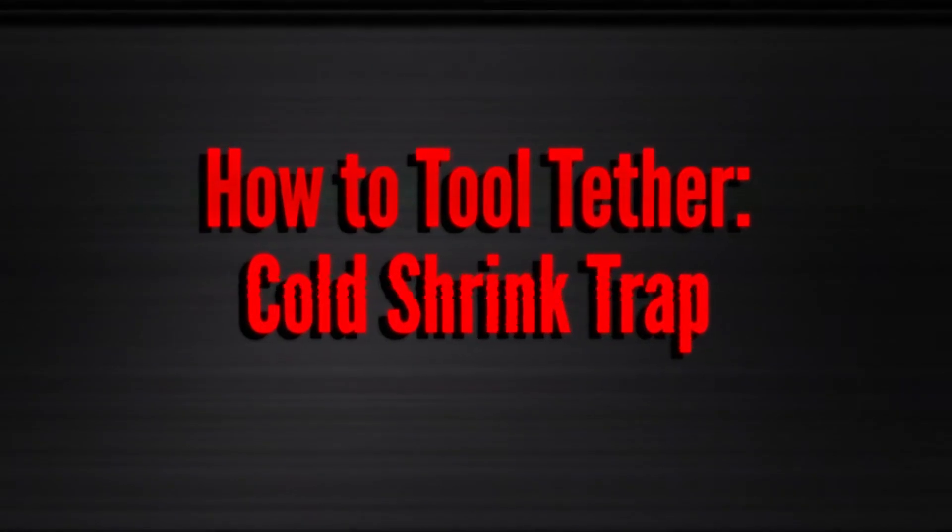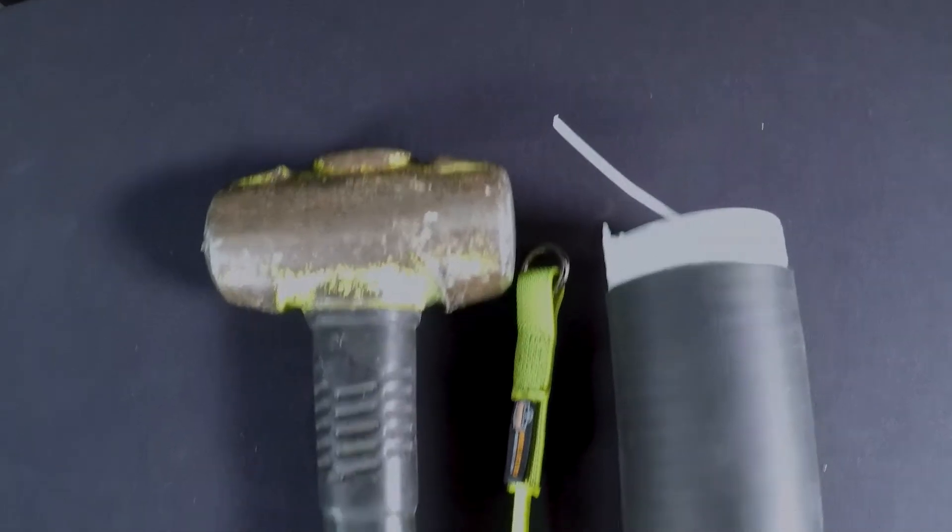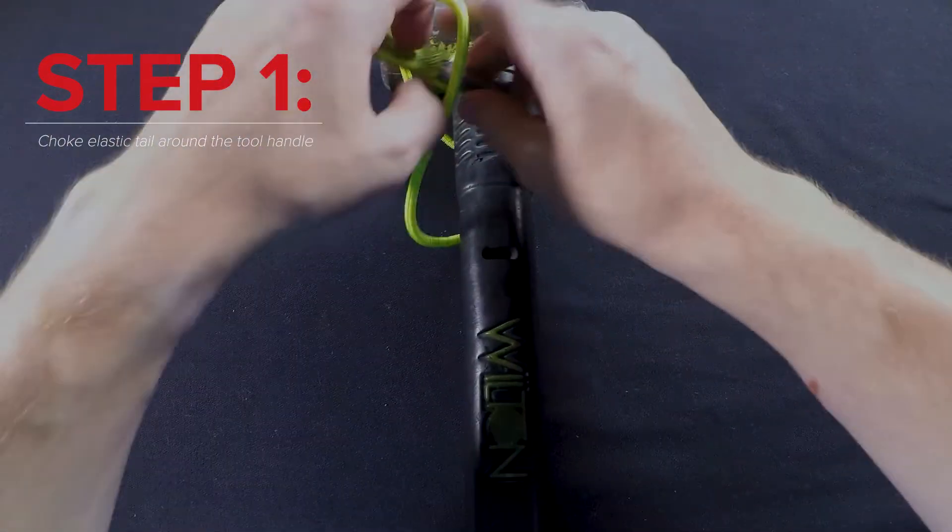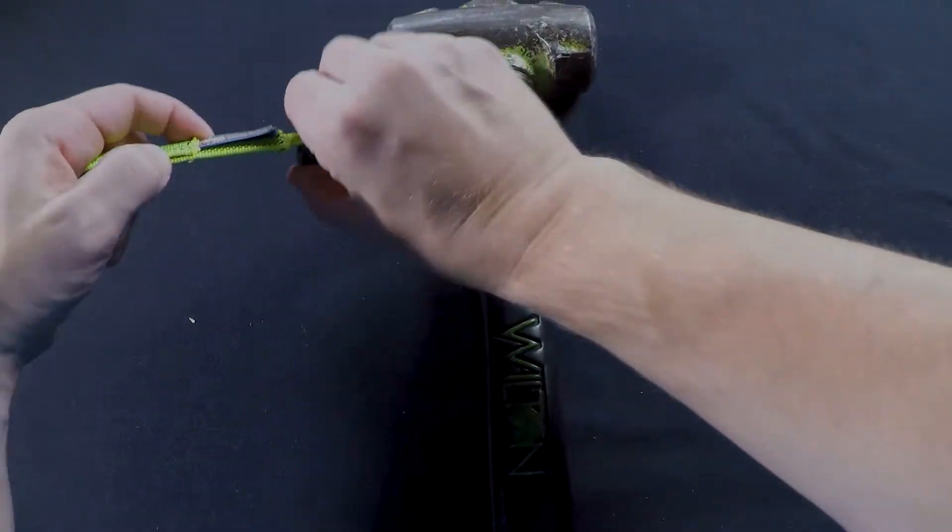Our fourth most common type of tool tether is the cold shrink trap. Just like the tape trap, you will begin by choking the elastic end of the tool tail onto the handle of your tool and tightening the barrel lock.